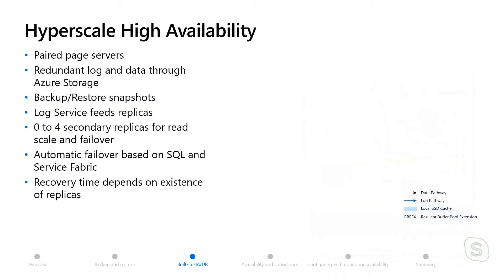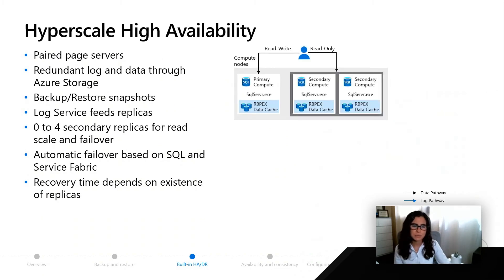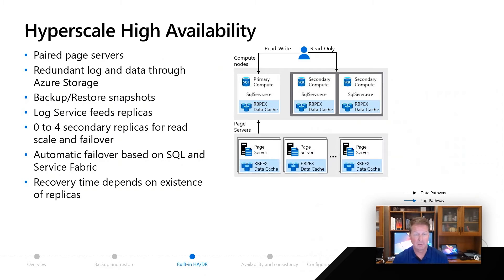The last service tier is the hyperscale service tier. Today, this is only in Azure SQL Database. The architecture looks slightly different but really uses the same front end: your application is still leveraging a gateway and a control ring. This architecture is really unique — we use a combination of local caches on local drives and something called a paired page server. You're seeing these compute nodes, which are like primary replicas with caching. In the middle, you have page servers that hold caches of database pages connected to the primaries.